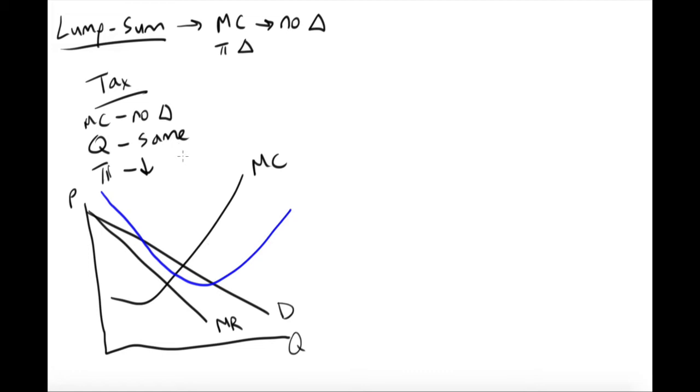And then we may have another one up here. And then so this would be average total cost 2 and average total cost 1. And so what this is showing is that with the tax in place, I have a higher average total cost.